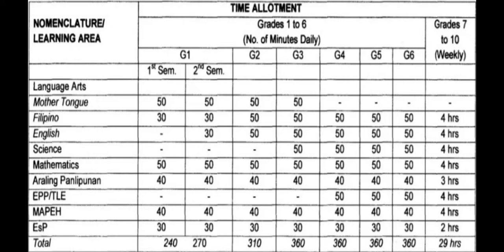Under grade 7 to grade 10, time is counted per week. For Filipino, English, Science, and Mathematics, the time allotted for grade 7 to grade 10 is 4 hours per week. The same applies to EPP or TLE and MAPE. ESP contains 2 hours per week, and Araling Panlipunan has 3 hours per week.